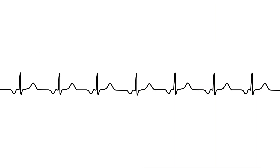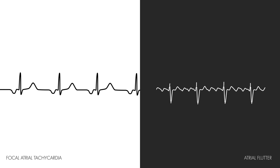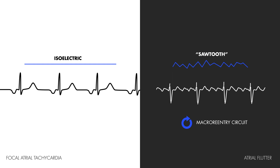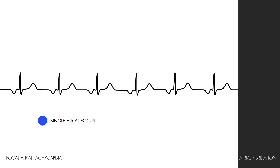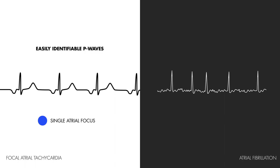This rhythm might seem similar at first to other atrial arrhythmias, but compared to atrial flutter, focal atrial tachycardia has an isoelectric baseline, as opposed to the sawtooth baseline seen in flutter. This stems from the fact that in atrial flutter, rhythms are the result of macro-reentry or larger circuits, whereas in focal atrial tachycardia there is a single atrial focus that classically conducts in a 1-to-1 ratio with the ventricles. Compared to atrial fibrillation, in focal atrial tachycardia P-waves can easily be differentiated, whereas in atrial fibrillation it is often difficult to make out clear P-waves because of the erratic depolarization of many ectopic atrial foci, which can occur almost simultaneously.